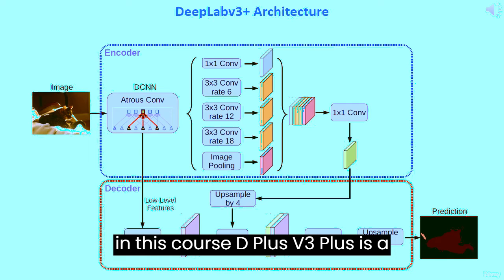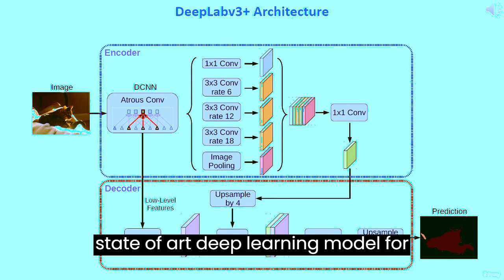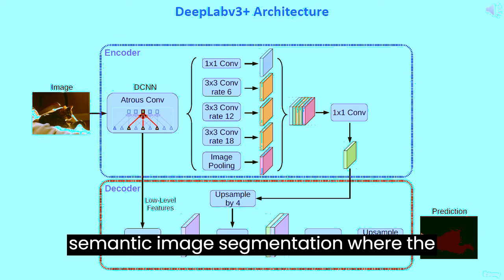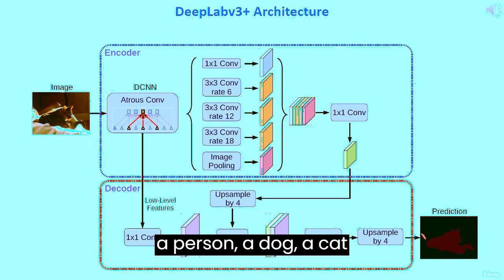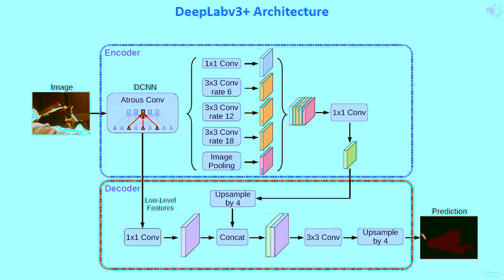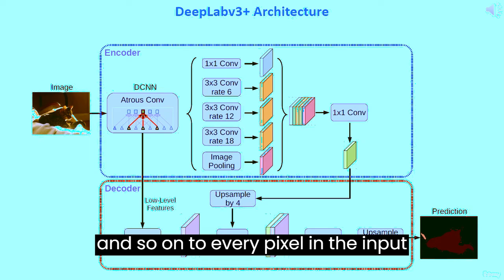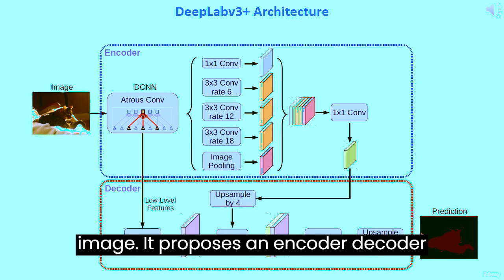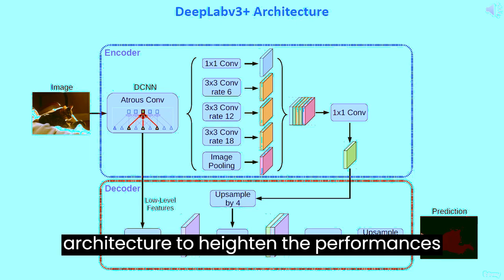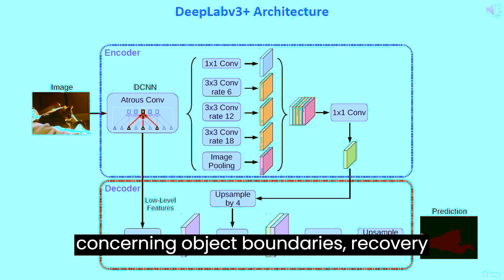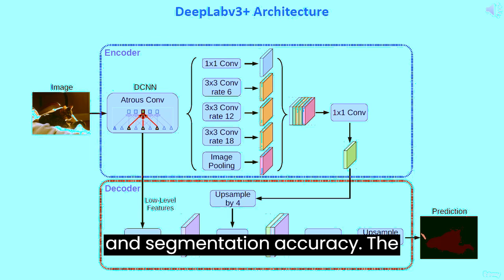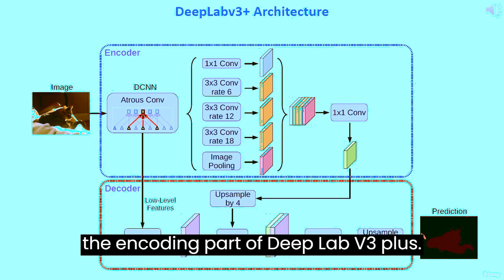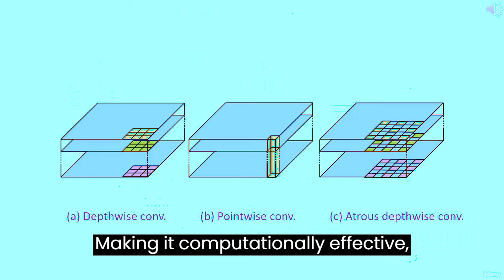DeepLab V3 Plus is a state-of-the-art deep learning model for semantic image segmentation, where the goal is to assign semantic labels such as a person, a dog, a cat, and so on to every pixel in the input image. It proposes an encoder-decoder architecture to heighten performance concerning object boundaries, recovery, and segmentation accuracy. The separable atrous convolution is used in the encoding part of DeepLab V3 Plus, making it computationally effective.